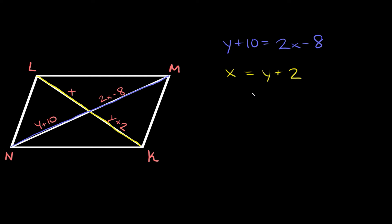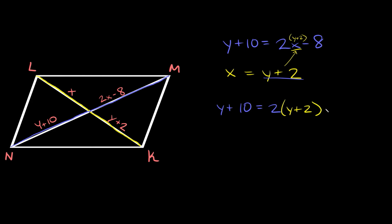To solve this system, I'll use the substitution method because it sets up nicely. Since x is equal to y plus 2, I'm going to substitute y plus 2 in for x in the first equation. Rewriting the top equation, we have y plus 10 is equal to 2 times (y plus 2) minus 8, which gives us y plus 10 is equal to 2y plus 4 minus 8.